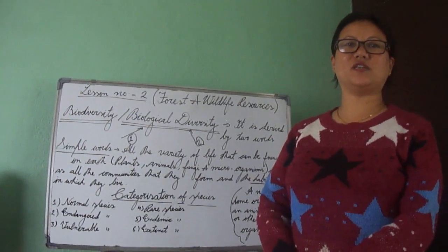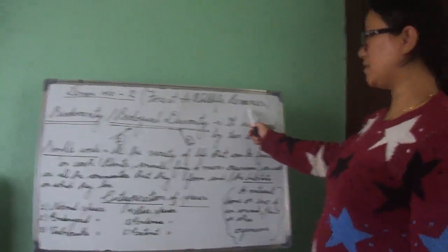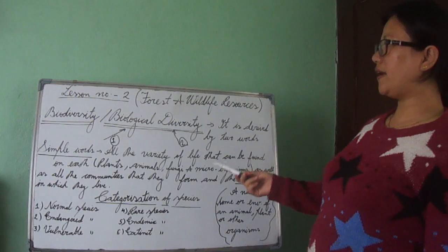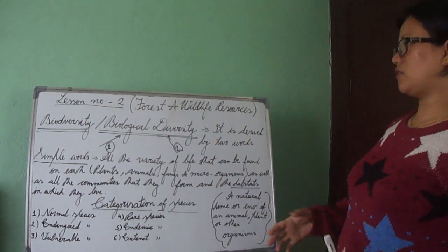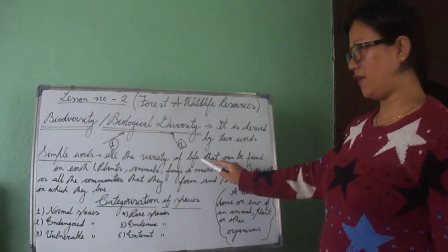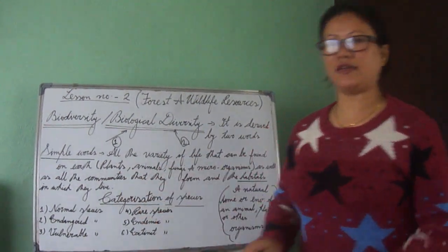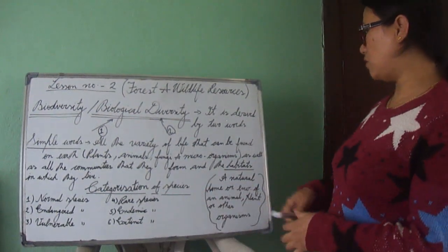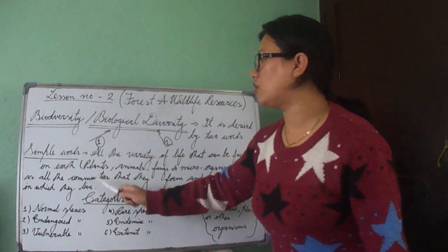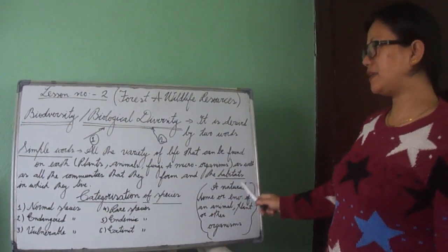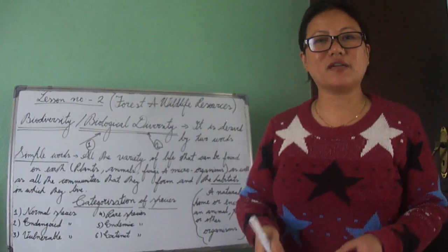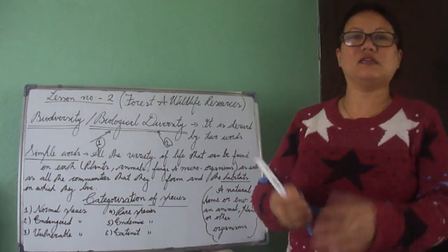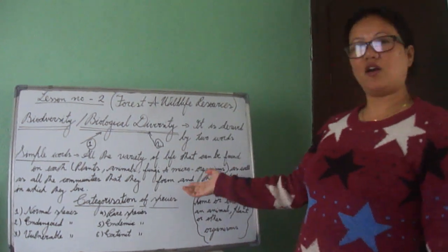Hello everybody, today we are going to start Chapter 2: Forest and Wildlife Resources. The very first term in this chapter is biodiversity. If we divide this term, we get biological diversity. Its definition is: all the variety of life that can be found on Earth — plants, animals, even small microorganisms — as well as all the communities they form and the habitats in which they live. Everything present on Earth comes under biodiversity.